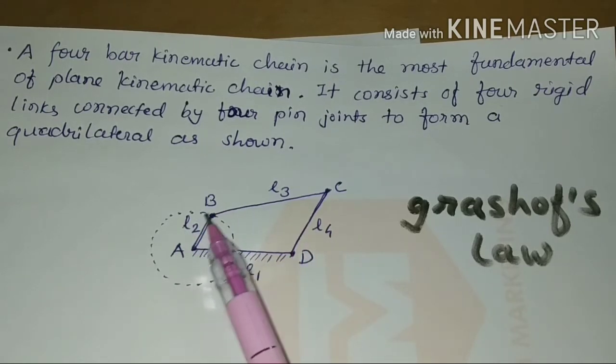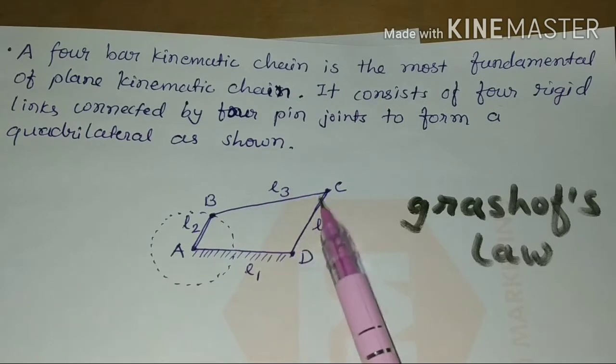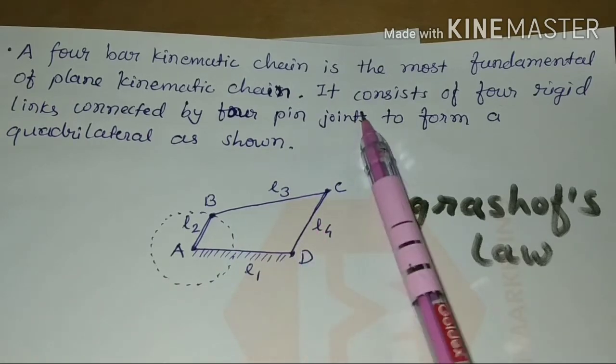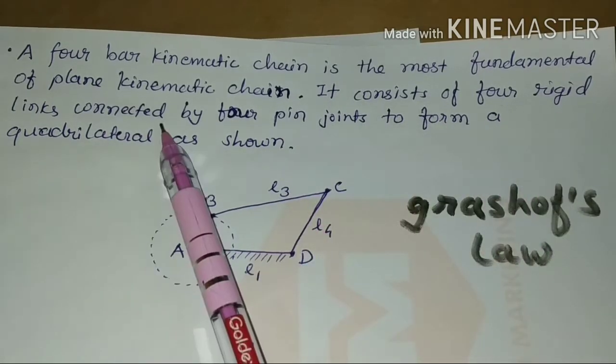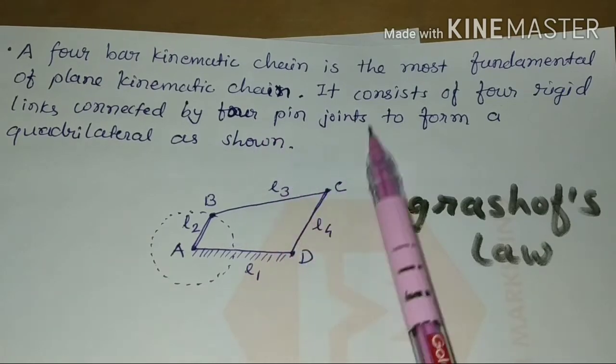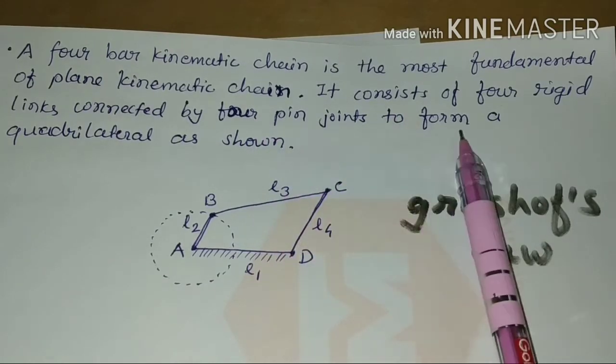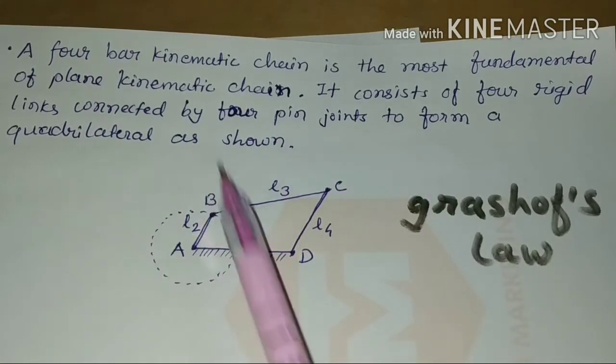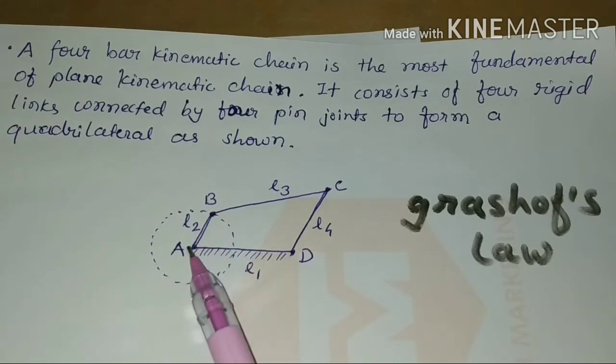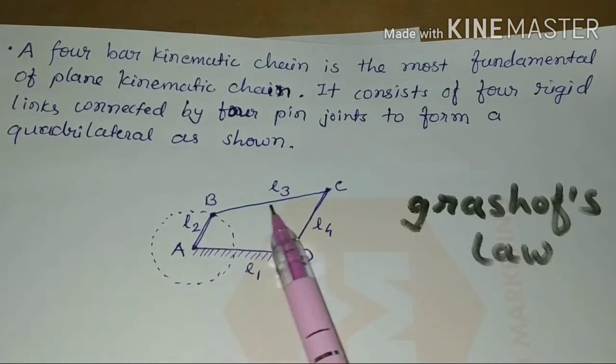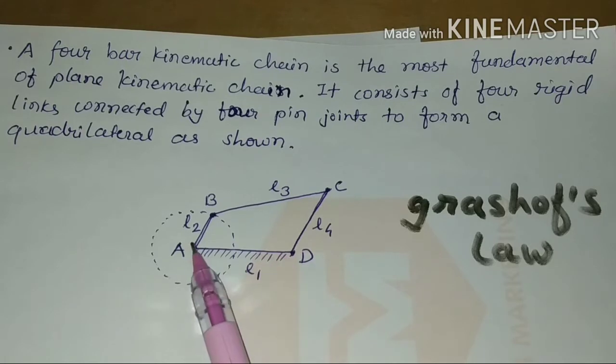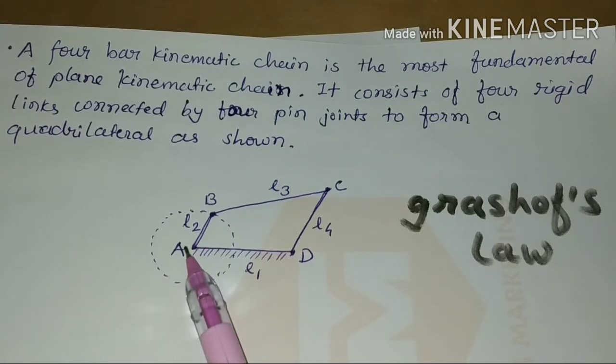It consists of 4 rigid links connected by 4 pins 1, 2, 3, 4 to form a quadrilateral. You can see A, B to C, D to A forming the quadrilateral.